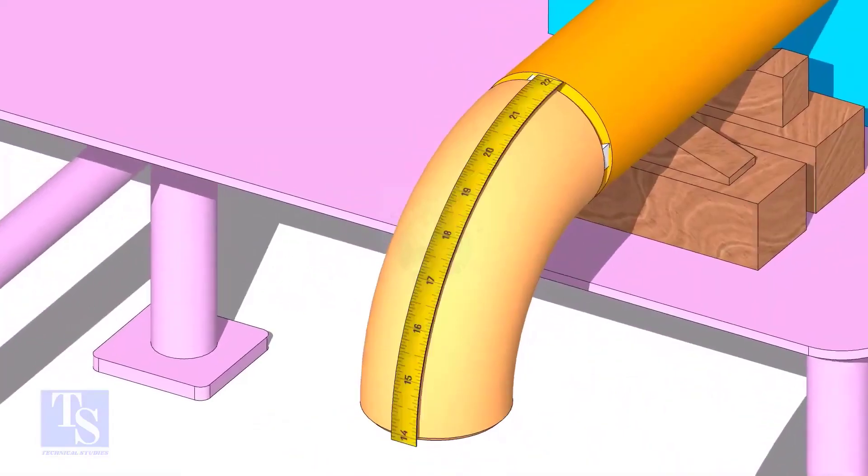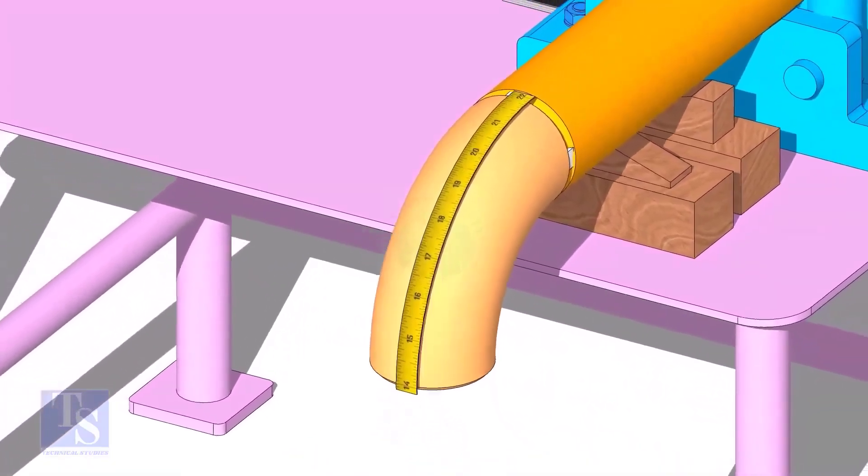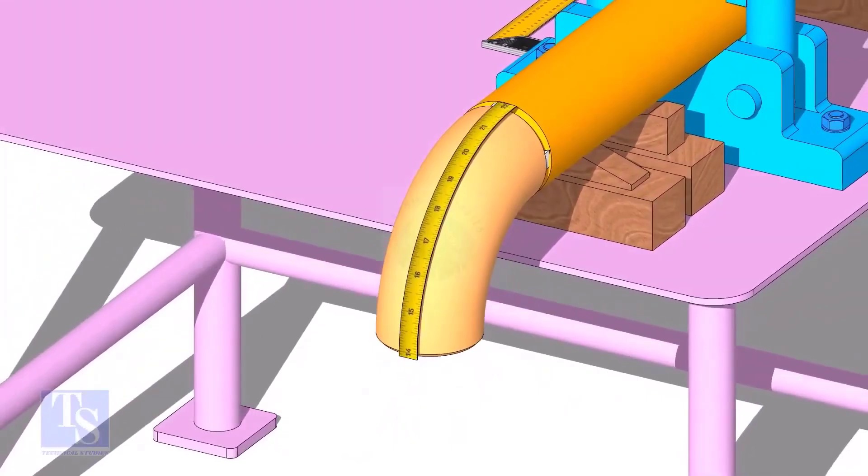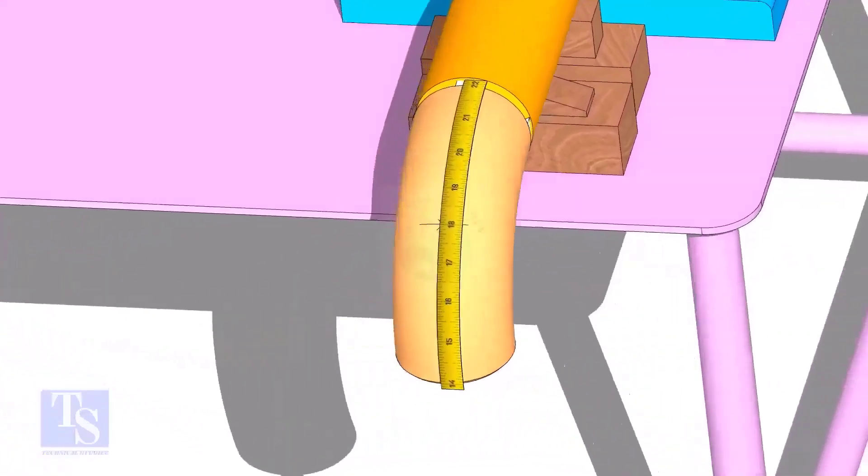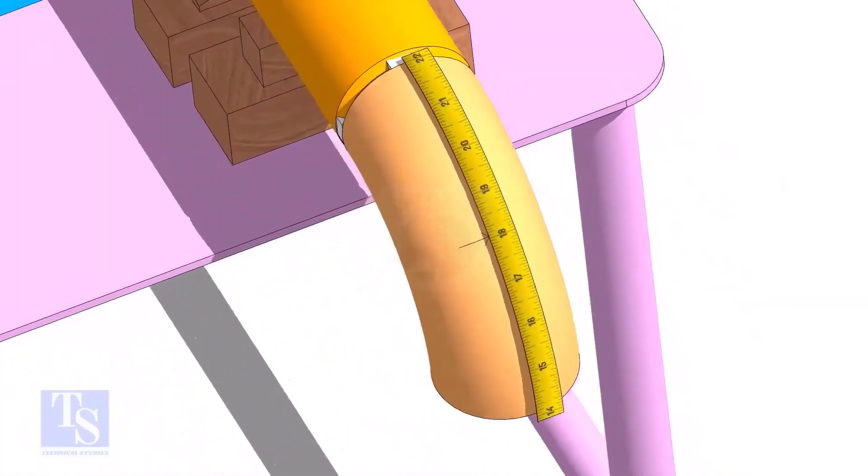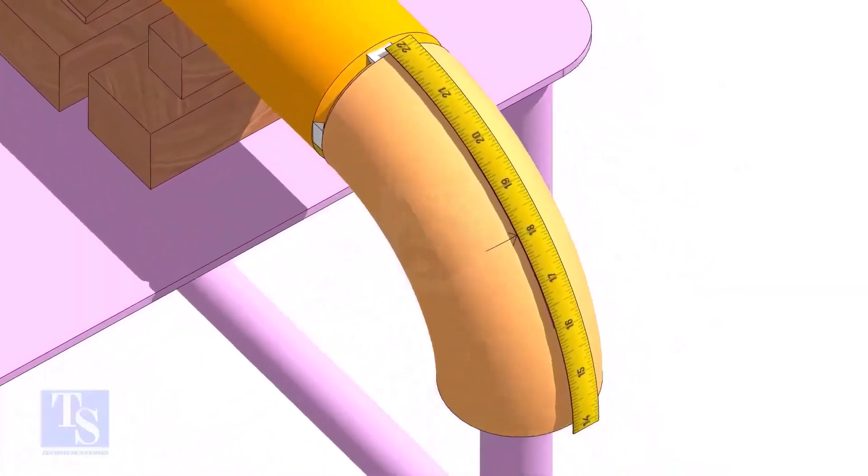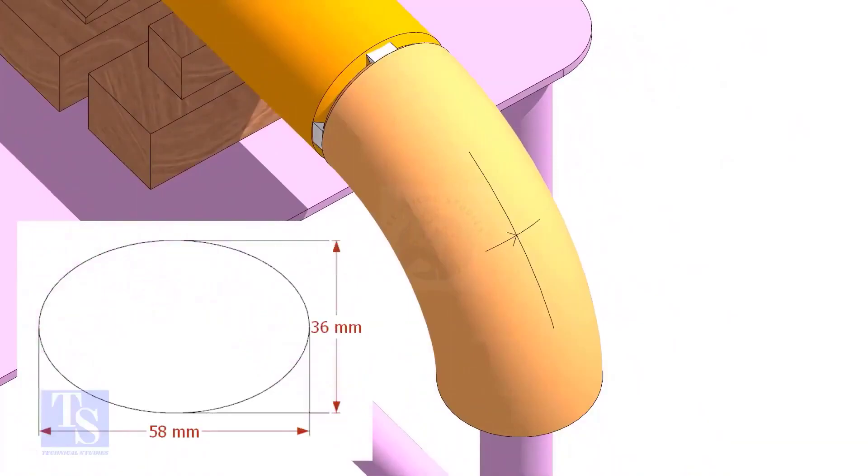Measure the outer circumference of the elbow and mark the half circumference on the center line as shown. Draw the elliptical circle on the elbow and cut the opening.